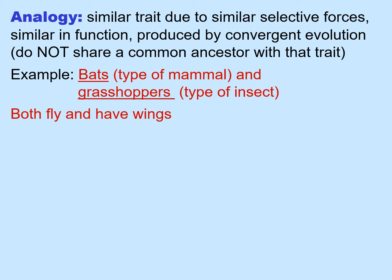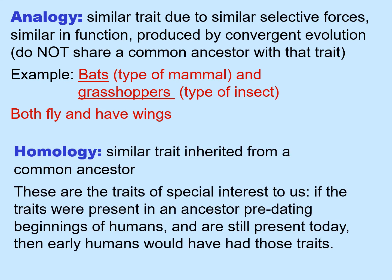One example of analogous traits would be bats, a type of mammal, and grasshoppers, a type of insect. Both fly and both have wings, but not because they share a common ancestor. Versus homologous traits — a trait that was inherited from a common ancestor — and these are the traits of special interest to anthropologists.